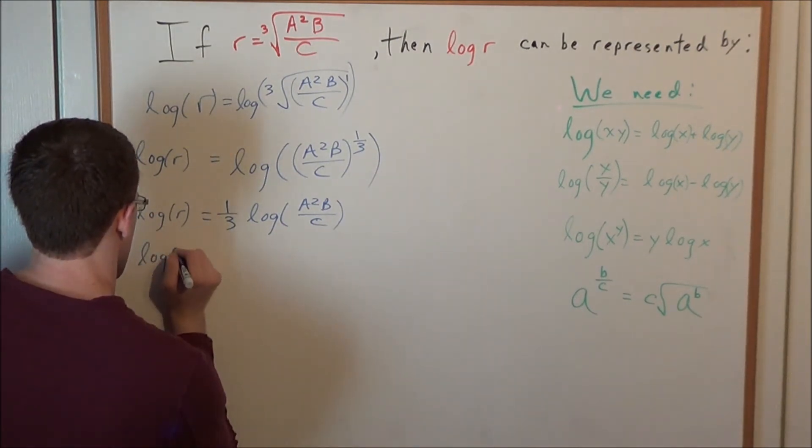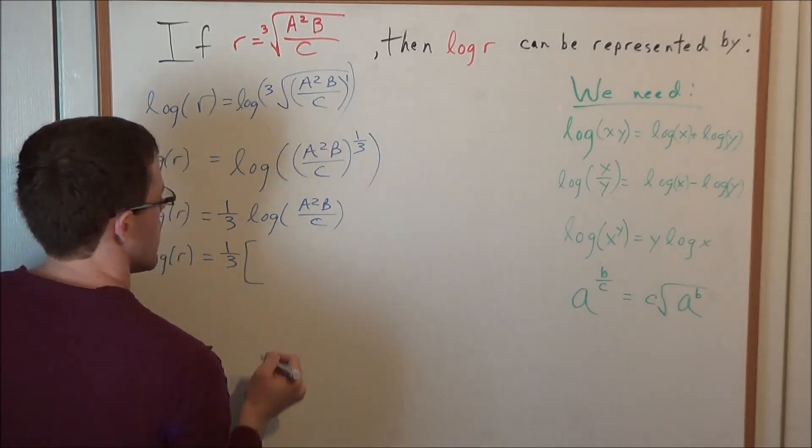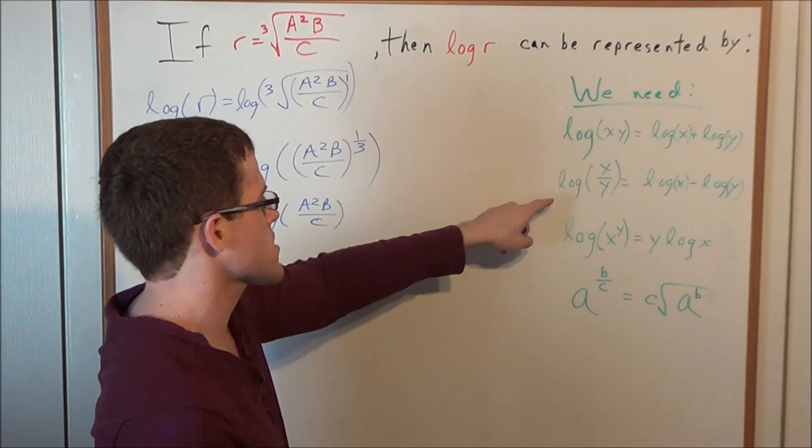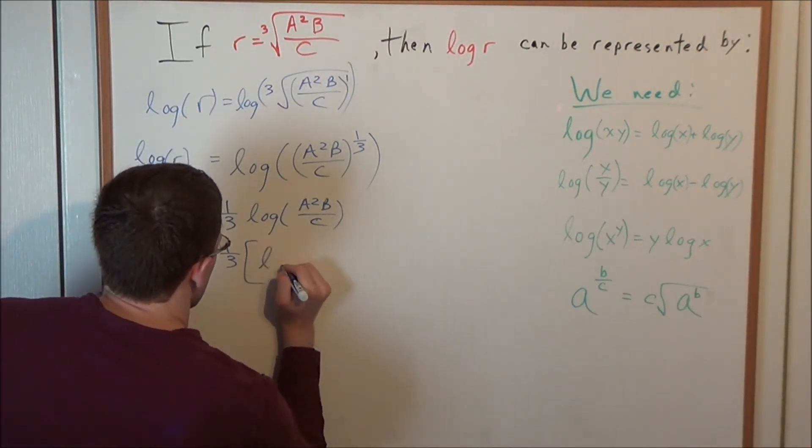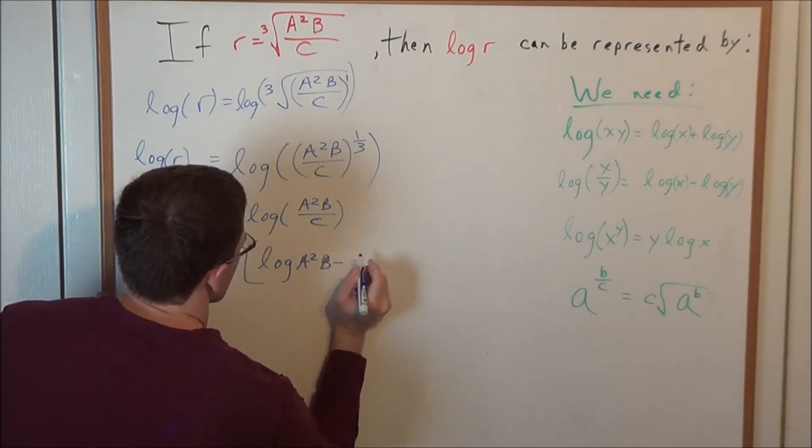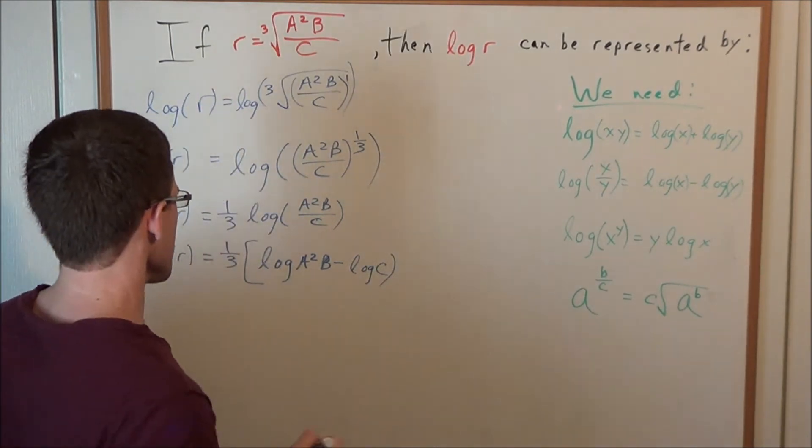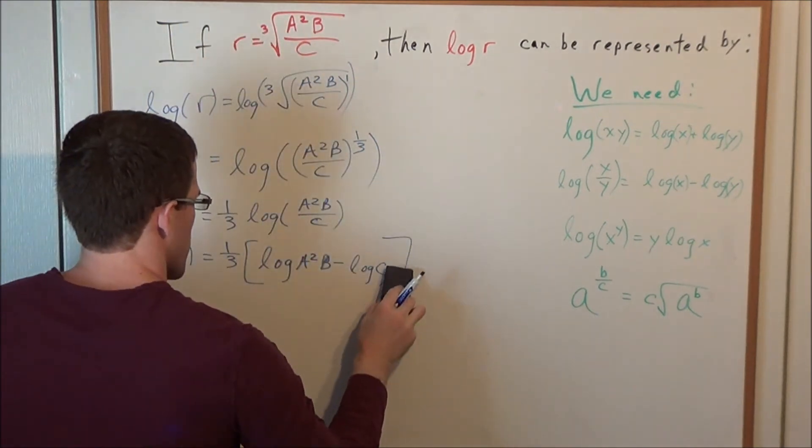So let's go ahead and first we'll break up the division going on in this log. So now we have log r equals one-third. And now using the division property, we could go ahead and separate this into two logs by subtraction. So we have log of a squared b minus log of c.